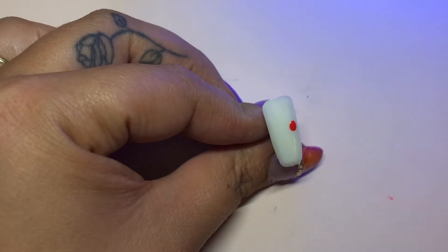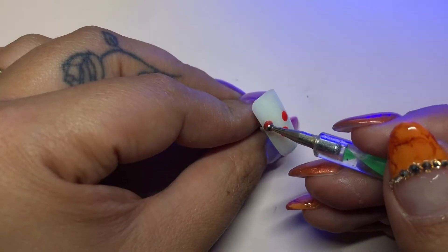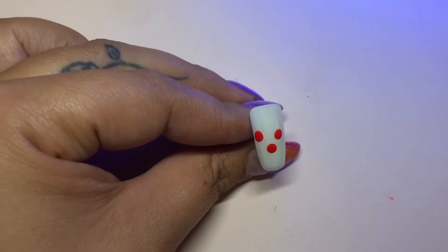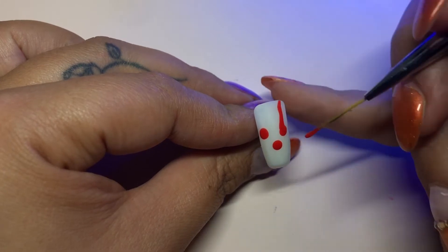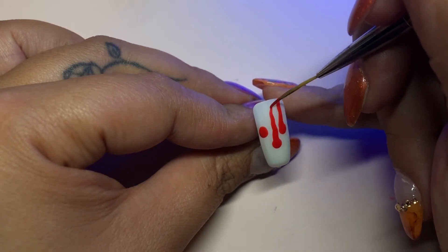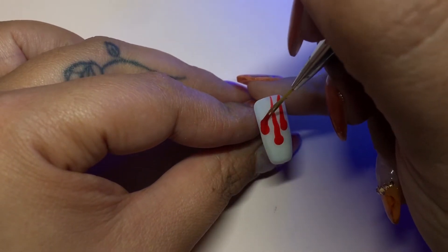So I put a coat of OPI Funny Bunny, which is a kind of milky white, and then I'm just going to dot my red and pull it up. This is really simple. You're just creating that dripping look.